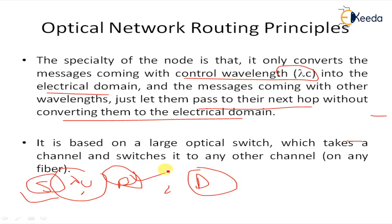The routing node waits for data message requests from the source. If a request comes with a particular lambda (wavelength), it converts into the electrical domain and puts it in a buffer or queue for any necessary data processing. The incoming link assigns a wavelength to the routing link. The destination stores the data in a delivery buffer until all chunks of the packet are received, then sends an ACK back to the source through the intermediate nodes. These are the basic principles required for the routing process in an optical network.